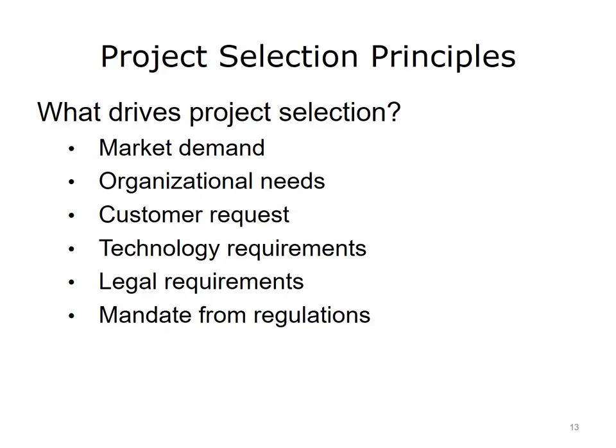The final set of factors to consider in project selection is called project selection principles — the key drivers that predetermine a project's anticipated viability and influence its selection for implementation. Project selection is often undertaken at the organizational level by a group of subject matter experts and senior management who have the perspective to know why the project is good for the enterprise and how it fits into an overall strategic plan. Common factors influencing project selection are market demand, organizational needs, customer request, technology requirements, legal requirements, and mandates from regulations. It is important for the project manager to know and understand the rationale for undertaking the project, what its priority is, and how it is connected to the larger strategic plan of an organization.